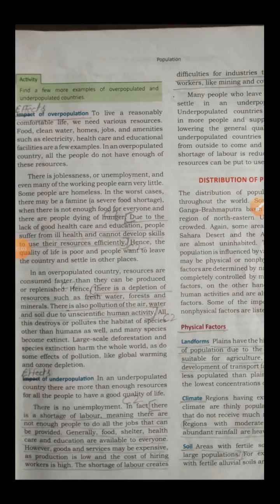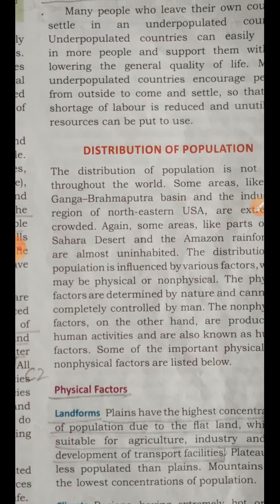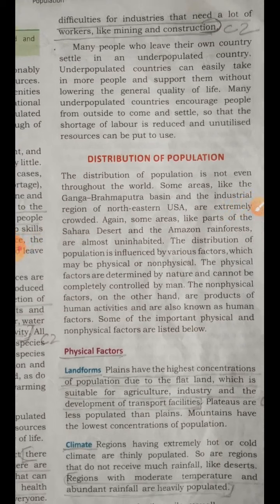After explaining effects of underpopulation, we are coming to distribution of population. Population is distributed in various parts of the world. The distribution of population is not even throughout the world. Some areas like the Ganga-Brahmaputra Basin and the industrial region of the northeastern USA are extremely crowded, while parts of the Sahara Desert and the Amazon rainforest are almost uninhabited. The distribution of population is influenced by physical and non-physical factors. Physical factors are determined by nature and cannot be completely controlled by man, while non-physical factors are products of human activities, also known as human factors.